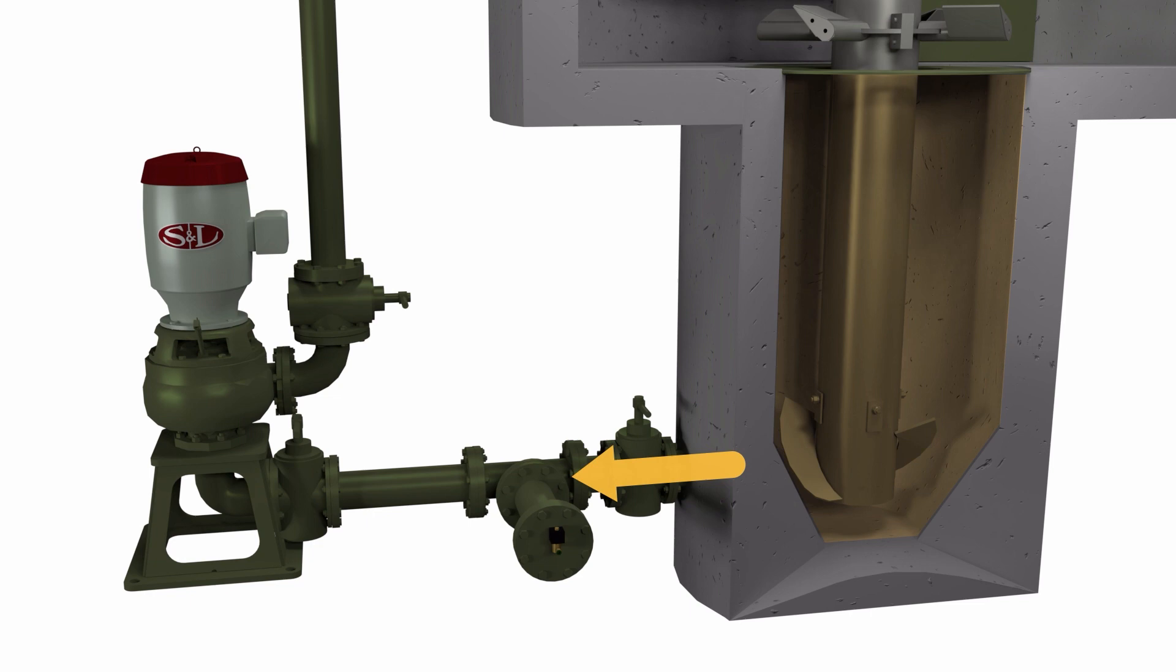The flooded suction pump has a horizontal run from the bottom of the grit hopper to the pump. A flush water system is used to keep grit fluid between pumping cycles.